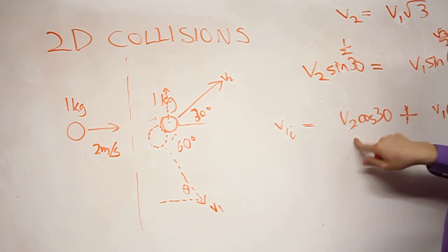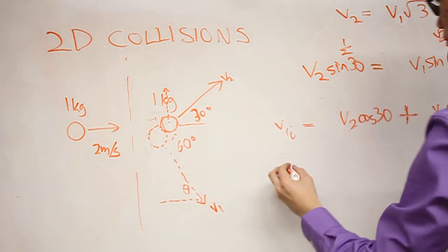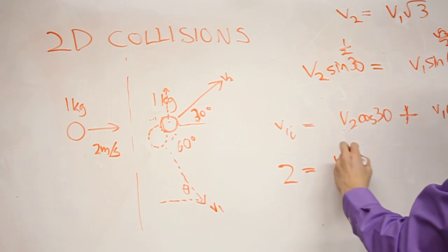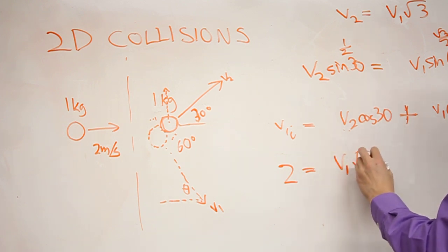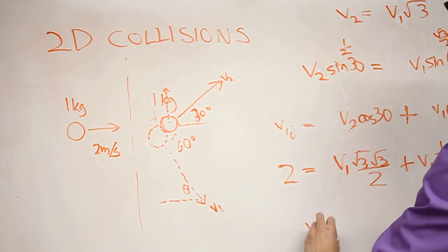So I'm going to take that and put it in here. So then our initial here is 2 meters per second. It's going to equal, take this, plug it in, V1 √3, cosine 30 is √3 over 2, plus V1, cosine 60 is 1 half. So now we can solve for V1. This comes out to be 3 over 2 plus 1 half equals 2. So V1 equals 1, 1 meter per second.